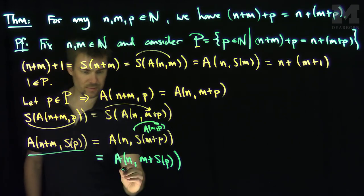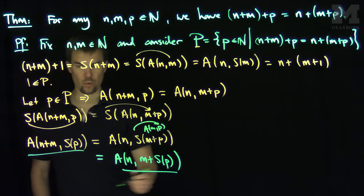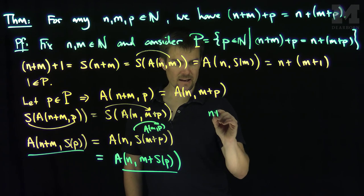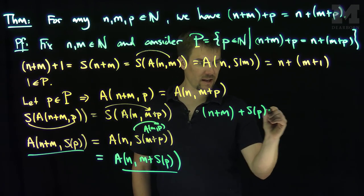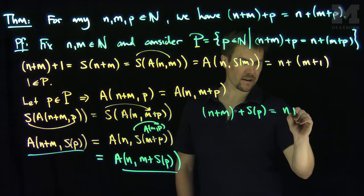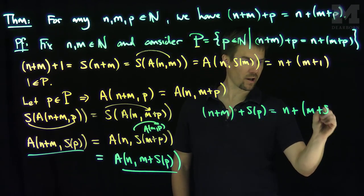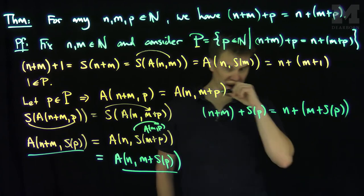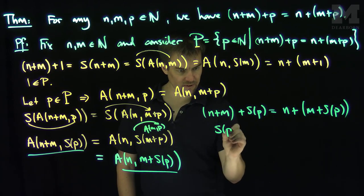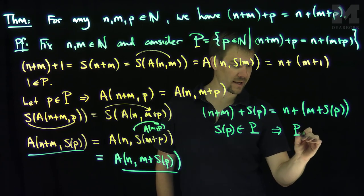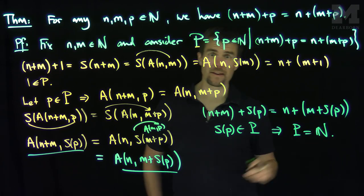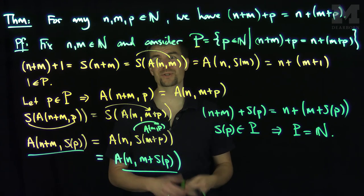So now what does this relationship tell us over here? That underlying relationship, that equality tells us that (n+m)+S(p) is equal to n+(m+S(p)). And that tells us that S(p) is in this set P capital, and therefore by induction, P capital is all natural numbers, and therefore addition is associative on the natural numbers.